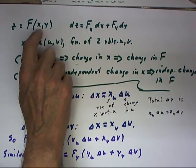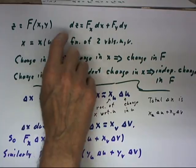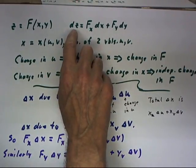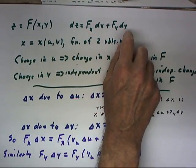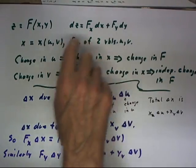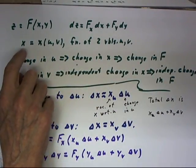If z is a function F, then the differential dz is fx dx plus fy dy, as we've seen on a number of occasions now.